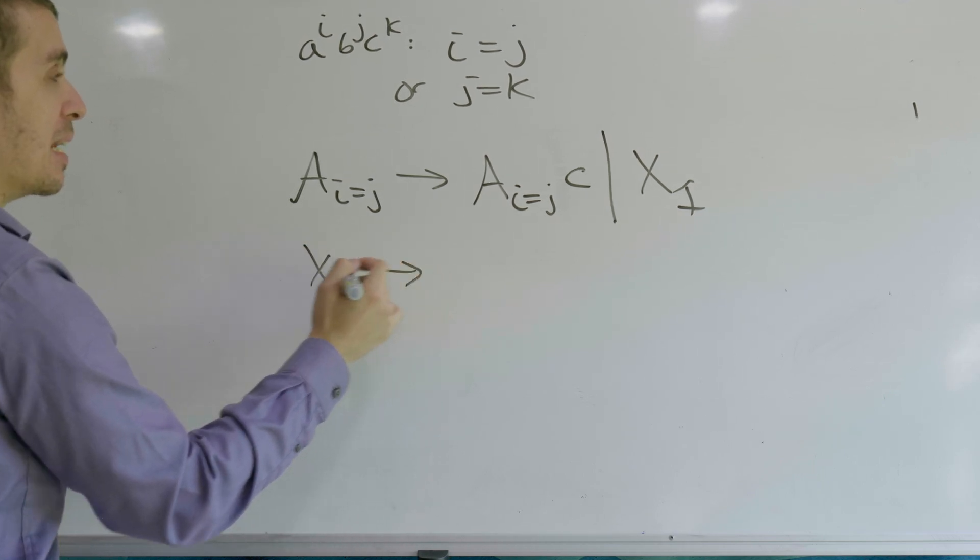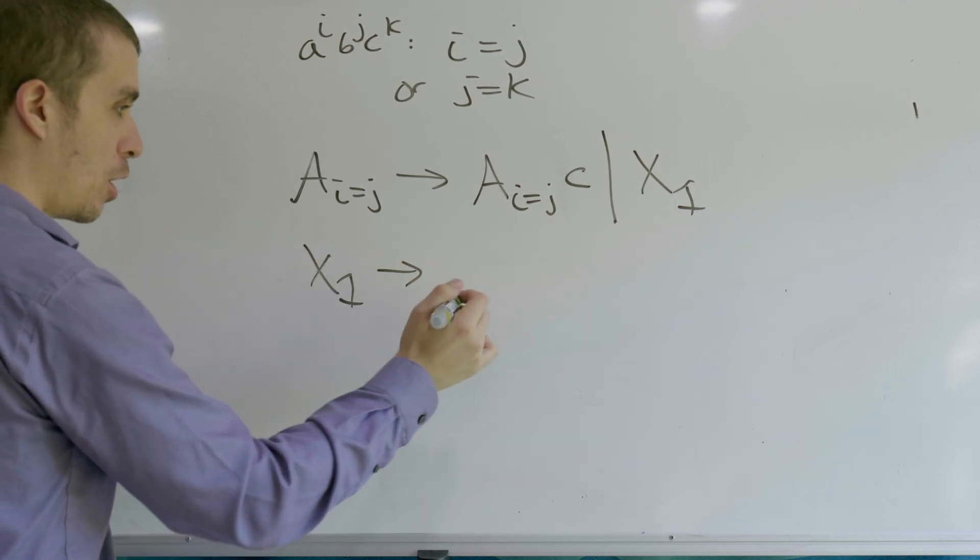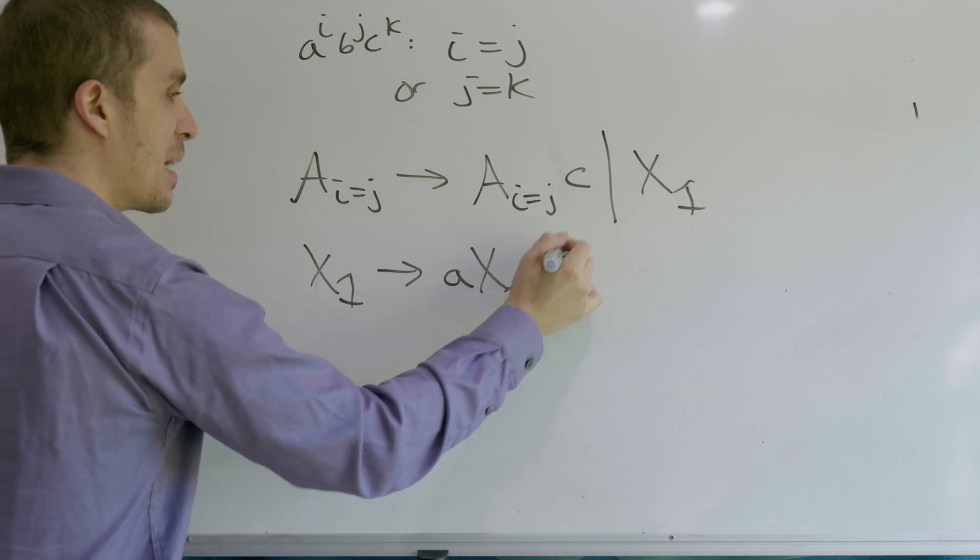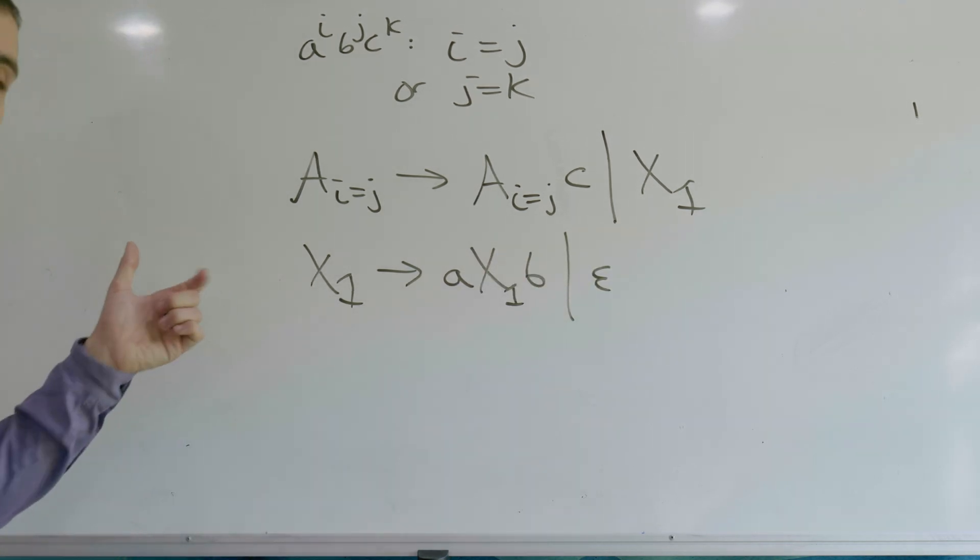So X1 is going to make an equal number of A's and B's, and that's all it does. So A, X1, B, or empty. So that's pretty easy.